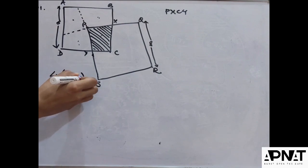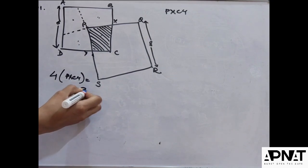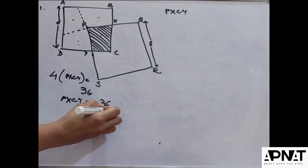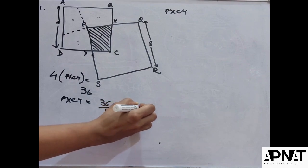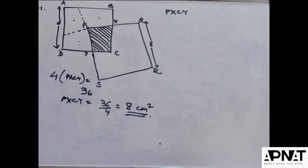Okay, PXCY equals the area of the square. What is the area of the square? The side is six, so simply the area is six squared, that is 36. So the area of PXCY is 36 by 4, that is 8 centimeter squared. Simple. So the answer was already in the question, in the diagram. That two was just to distract us.